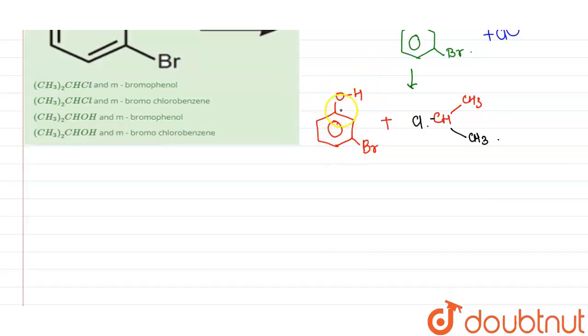So this compound is phenol. And at phenol, this position is ortho, this position is meta, this position is para. So we can see this compound is meta-bromophenol.